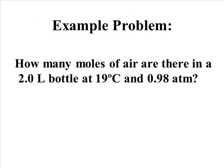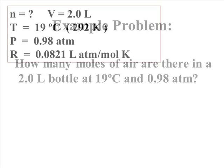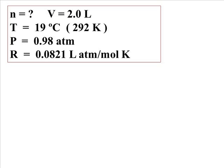Let's work a gas law problem. We want to know how many moles of air there are in a 2 liter bottle at 19 degrees Celsius under 0.98 atmospheres of pressure. Looking at our data, we see that we have all the variables we need to plug into the ideal gas law except for the number of moles.